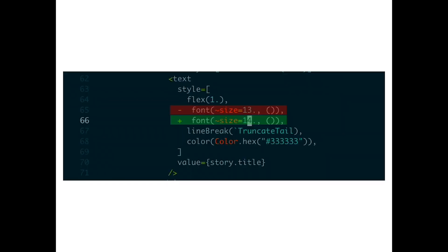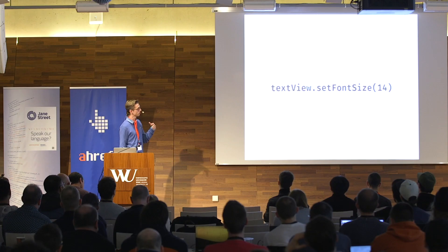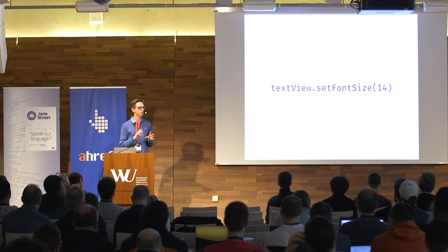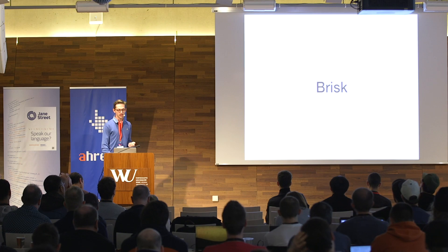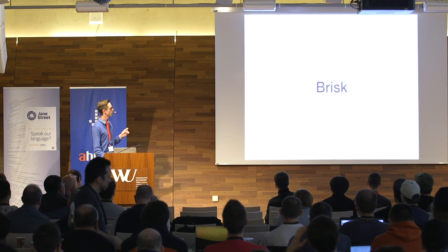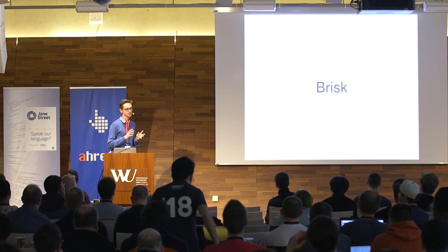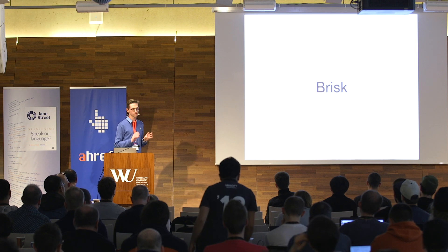If you make a change, like you change the font size from 13 to 14, the reconciler is responsible for figuring out what's changed and doing the minimal set of changes. And the interesting thing is that Brisk and Reverie share the same reconciler, even though they do a little bit of different things.